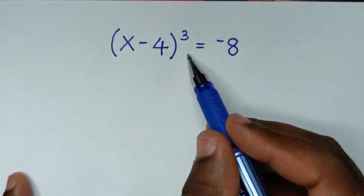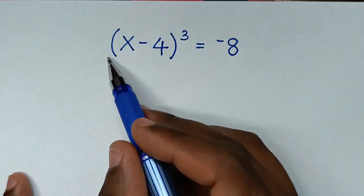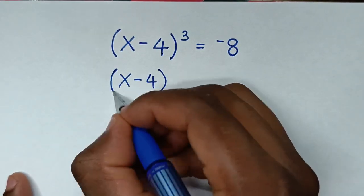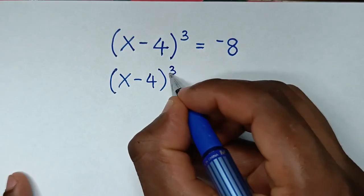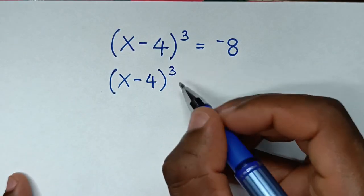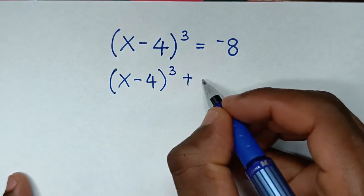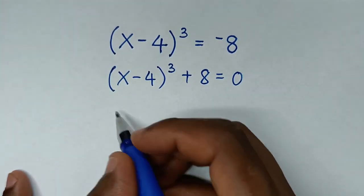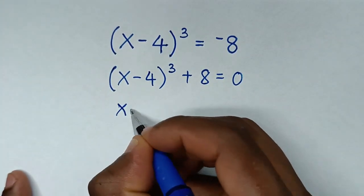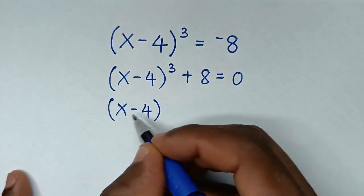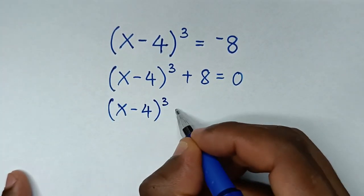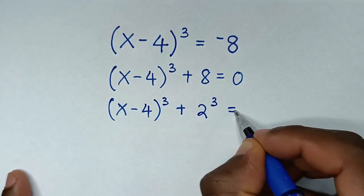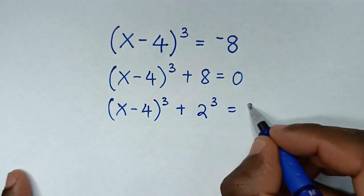Moving -8 to the left side, we get (x - 4)³ + 8 = 0. Note that 8 is the same as 2³, so this becomes (x - 4)³ + 2³ = 0.